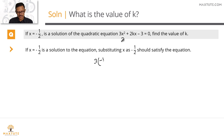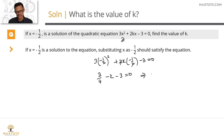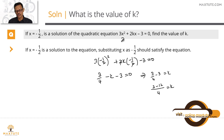Substituting x = −1/2: 3(−1/2)² + 2k(−1/2) − 3 = 0. (−1/2)² is 1/4, so 3 × 1/4 is 3/4. The 2 cancels with 2, giving −k. So 3/4 − k − 3 = 0. Taking k to the right: 3/4 − 3 = k. With common denominator 4: (3 − 12)/4 = −9/4. So k = −9/4.